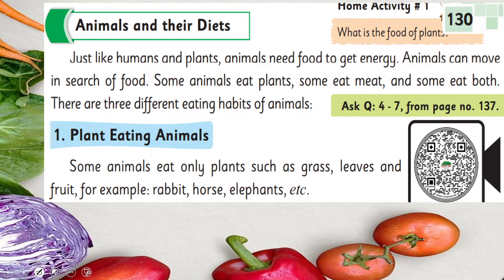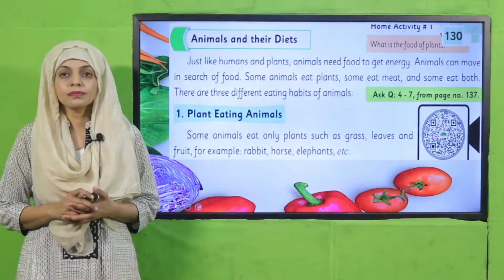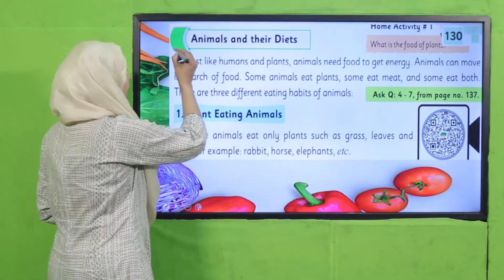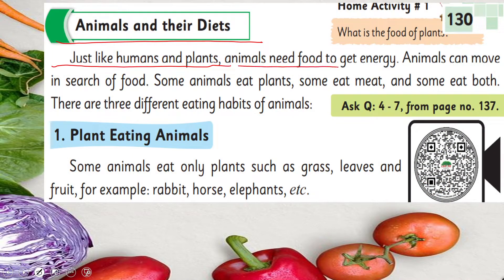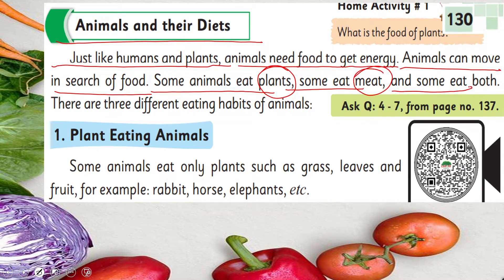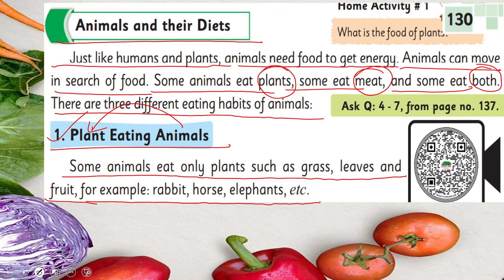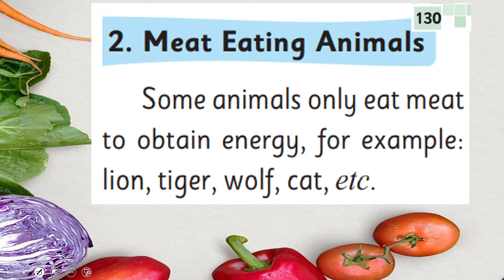Now it's time for reading. Please open page number 130 in your GK3 books. Put your fingers where I will read. Animals and their diets: just like humans and plants, animals need food to get energy. Animals can move in search of food. Some animals eat plants, some eat meat, and some eat both. There are three different eating habits of animals. Plant-eating animals — animals that eat only plants such as grass, leaves, and fruit — for example, rabbit, horse, and elephant.